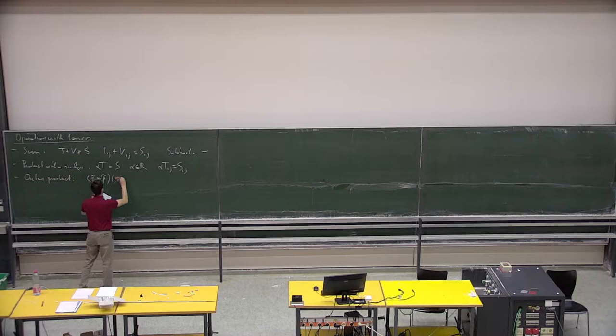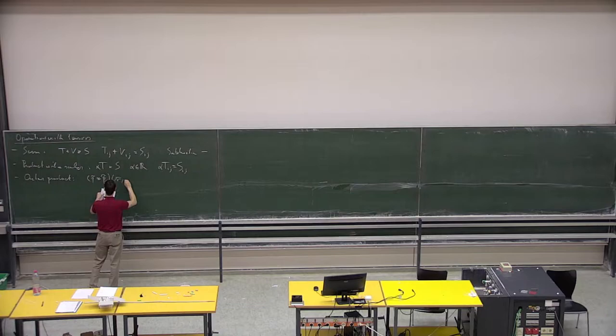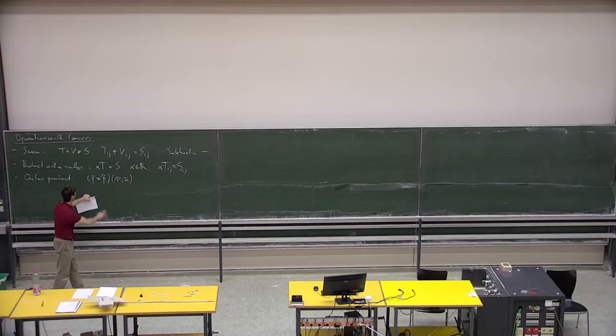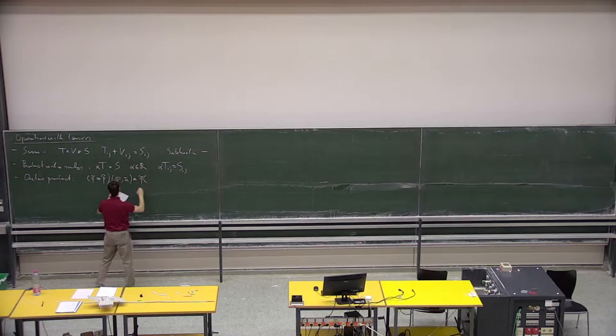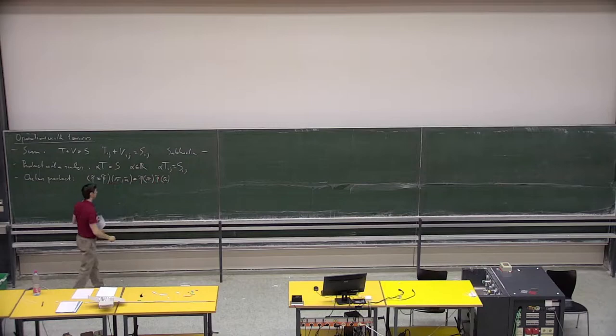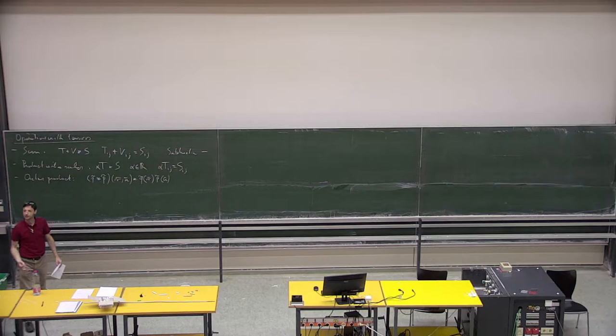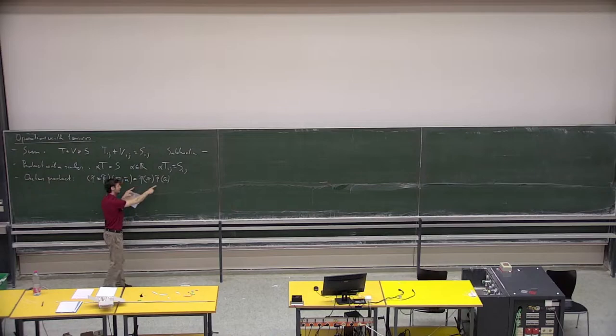This object can be applied — since it acts on one-forms, it is applied to vectors. The outer product of two one-forms applied to a vector U is defined as the first one-form applied to vector V times the second one-form applied to U. This was the definition we gave for this operation; it's just a way of writing. The machinery of the outer product is this.